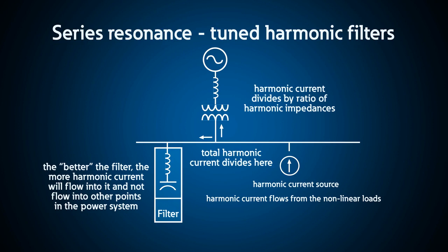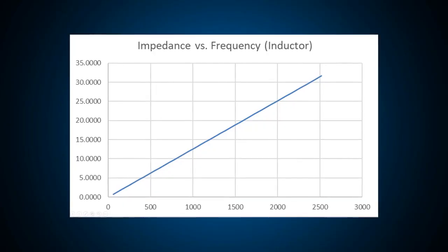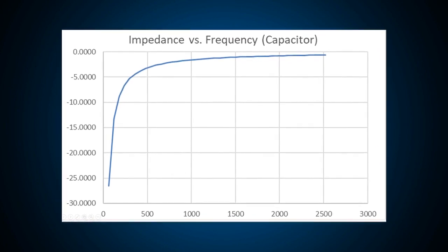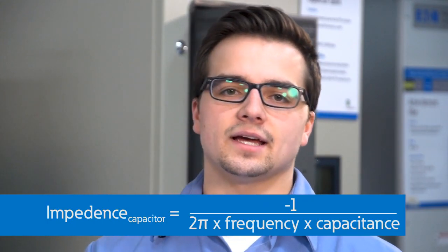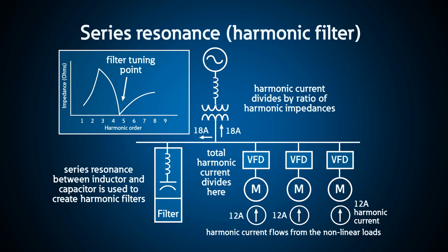Let's back up a second and define resonance. Series resonance occurs when you put a capacitor in series with an inductor — we call this a harmonic filter. We tune this filter to a specific frequency by selecting the components that match impedance at the desired tuning frequency. Since the impedance of an inductor is defined by 2π times frequency times the inductance, its impedance increases as the frequency increases. The impedance of a capacitor is the opposite — it decreases as the frequency increases because its impedance is 1 over 2π times the frequency times the capacitance. When the two impedances match, the filter is a very low impedance, almost a short circuit, aside from a little bit of resistance. Harmonic current of that frequency will want to go through that filter path, dividing to the path of least impedance, so the closer you tune a filter to the frequency you want, the more effective it is.